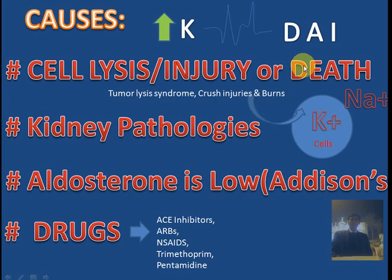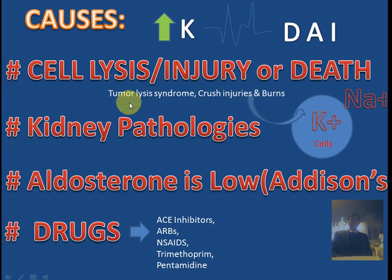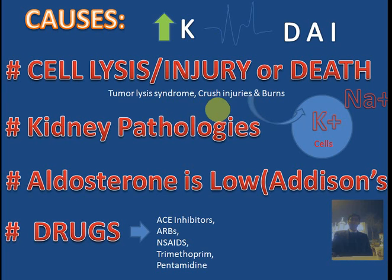Cell lysis or cell injury — as we know, potassium is predominantly an intracellular cation. Any cause that causes cell damage, cell injury, or cell lysis leads to leakage of potassium out of the cells into the extracellular space. The main causes commonly asked are: first, tumor lysis syndrome due to chemotherapy; second, crush injuries or traumas causing muscle cell death and raising potassium; and third, bone pathology can also cause hyperkalemia. Next, kidney pathologies like glomerulonephritis or acute or chronic renal failure — kidneys excrete potassium, so if they fail there is hyperkalemia.